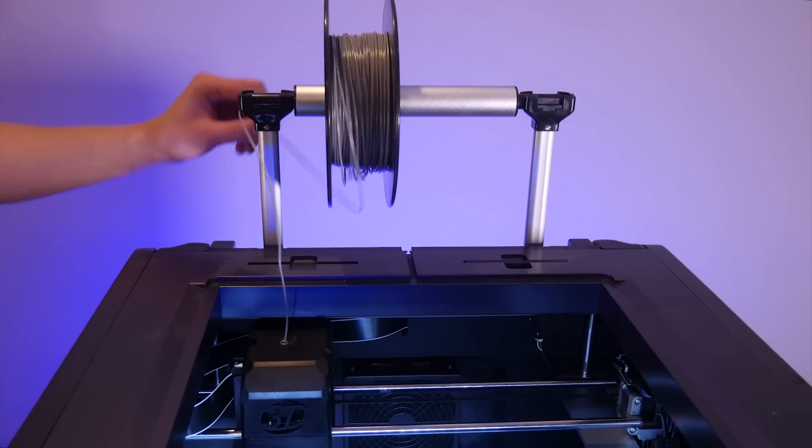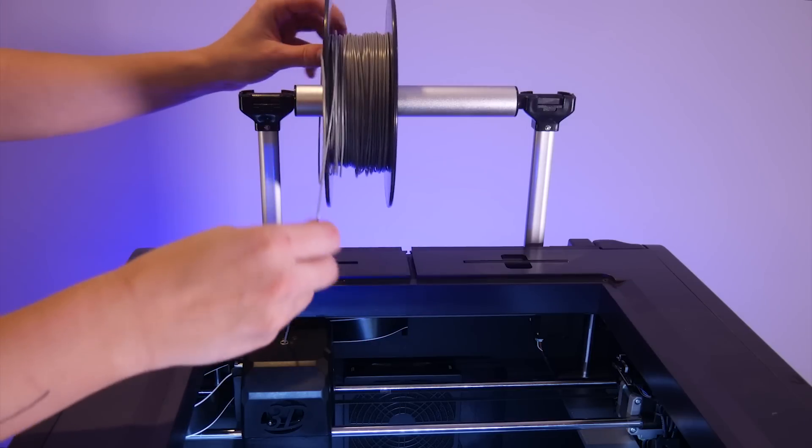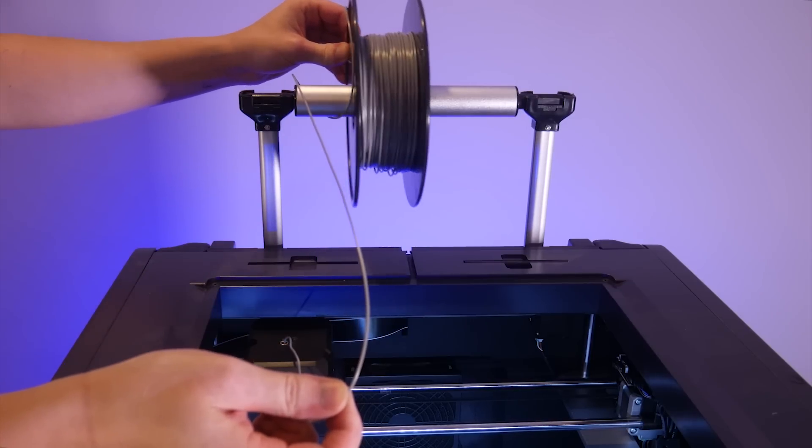This style filament holder is fine for a machine with a bed that moves on the Y, but when the extruder moves back and forth, it's prone to pulling too much filament off the roll and creating a fair amount of slack that can create a tangle.